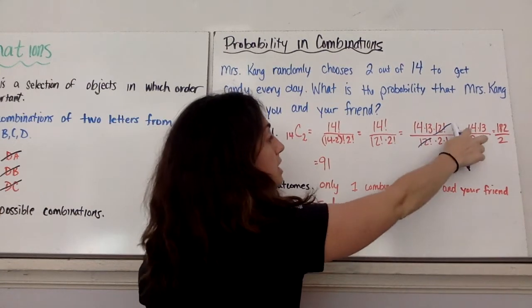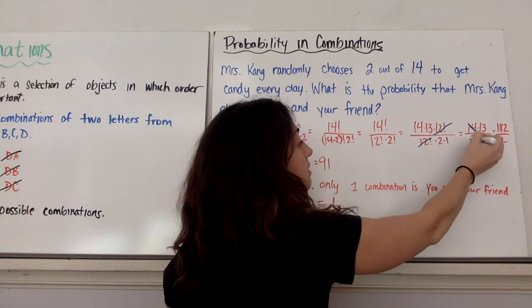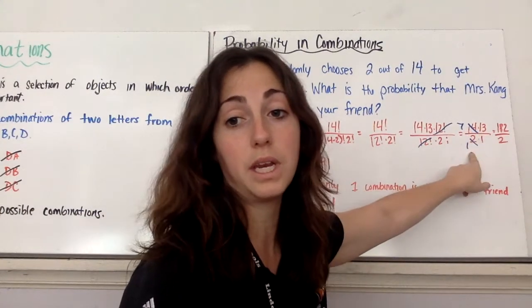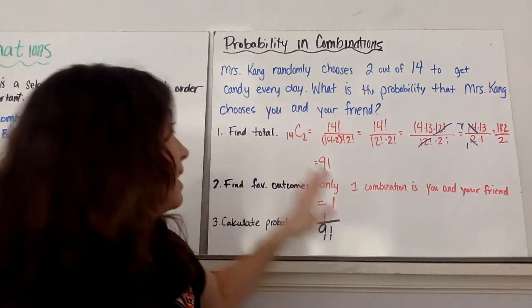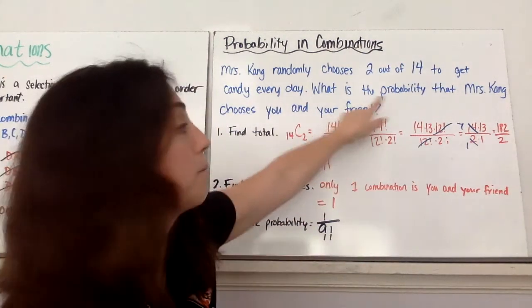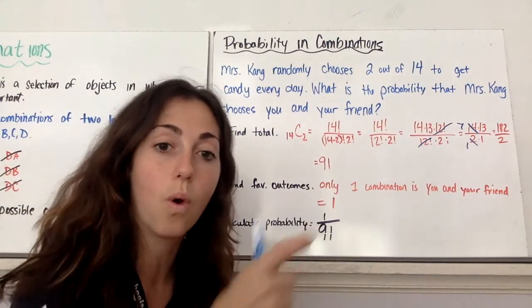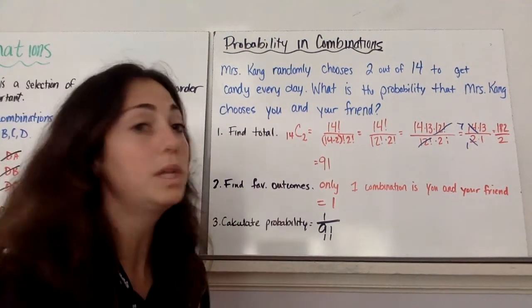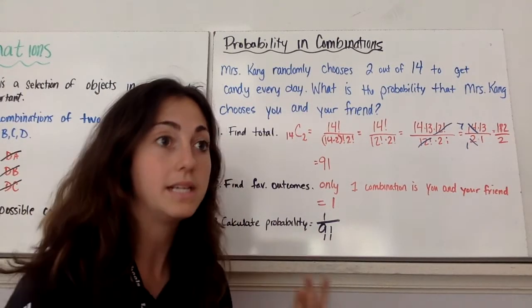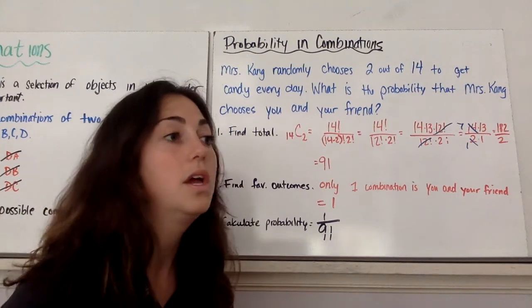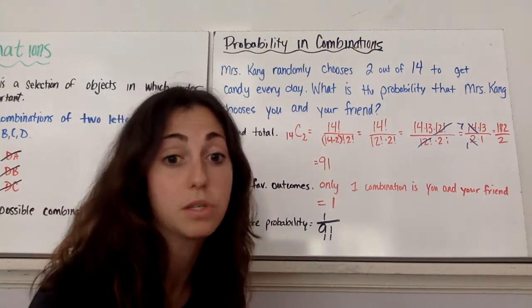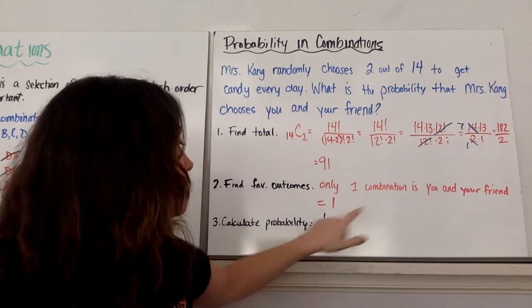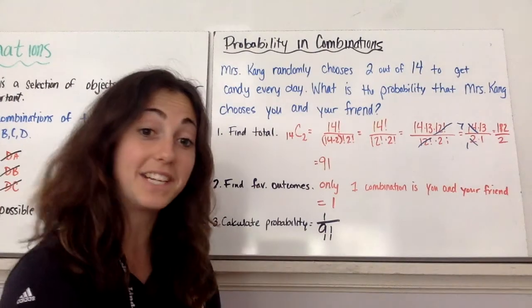And you have 14 times 13 and 2 times 1, which you could do some dividing out, which is 7 times 13, which is 91, or just multiply. 14 times 13 is 182. 2 times 1 is 2. Divide, you get 91. So that's my total. That's not what we're looking for, we're looking for the probability. So probability is the success over the number of favorable outcomes over the total. So I know my denominator. I need my favorable outcomes. So there's only one combination of you and your friend getting picked. There's a lot of combinations, 91. But there's only one combination of the two of you. So that would be one out of 91 and that's your probability. Yay.